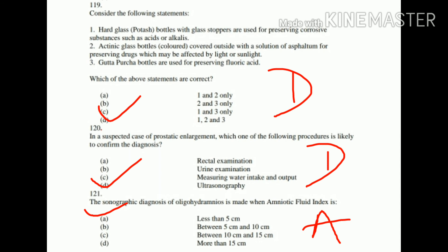Question number 120: In a suspected case of prostatic enlargement, which one of the following procedures is likely to confirm the diagnosis? Options: A. Rectal examination, B. Urinary examination, C. Measuring water intake or output, D. Ultrasonography. Ultrasonography gives a proper assessment of the prostatic gland and shows how much enlargement is present.